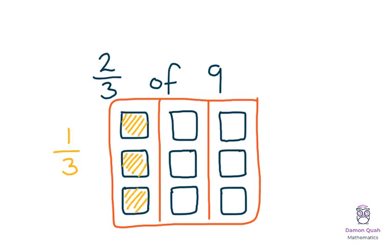So 1 group is 1 third as we discovered earlier. So 2 groups or 2 thirds would be as shown in yellow. So that would be 6. So 2 thirds of 9 is 6 because I've solved how many 1 third is and then I've now got 2 of them.